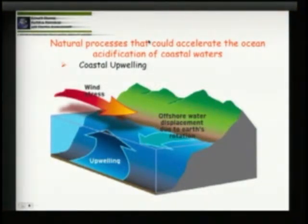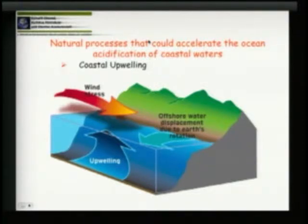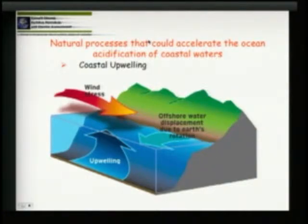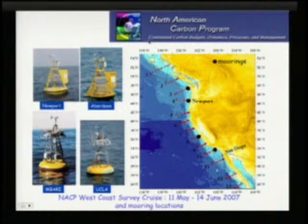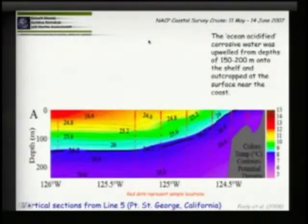We have to concern ourselves with natural processes that can accelerate this. Along our coast, there is a natural coastal upwelling process that occurs in the summertime. When winds come from the northwest, surface waters are pushed offshore and deeper waters move onshore. This upwelling process occurs from Canada to Mexico. In 2007, we conducted a cruise to define how this impacts our continental shelf.